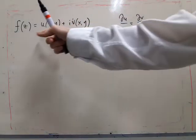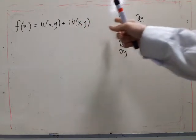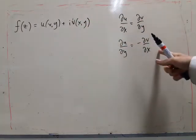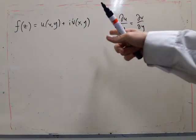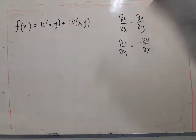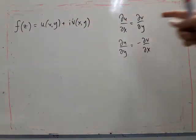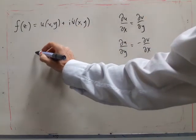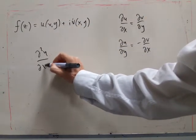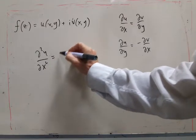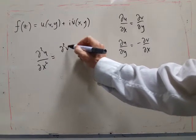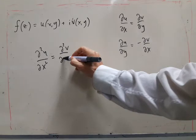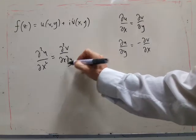So to see that, if f is analytic, it means that u and v satisfy the Cauchy-Riemann equations, and all we need to do to show that u and v are harmonic functions is differentiate this one with respect to x. So that gives us d²u/dx² equals d²v/dxdy.